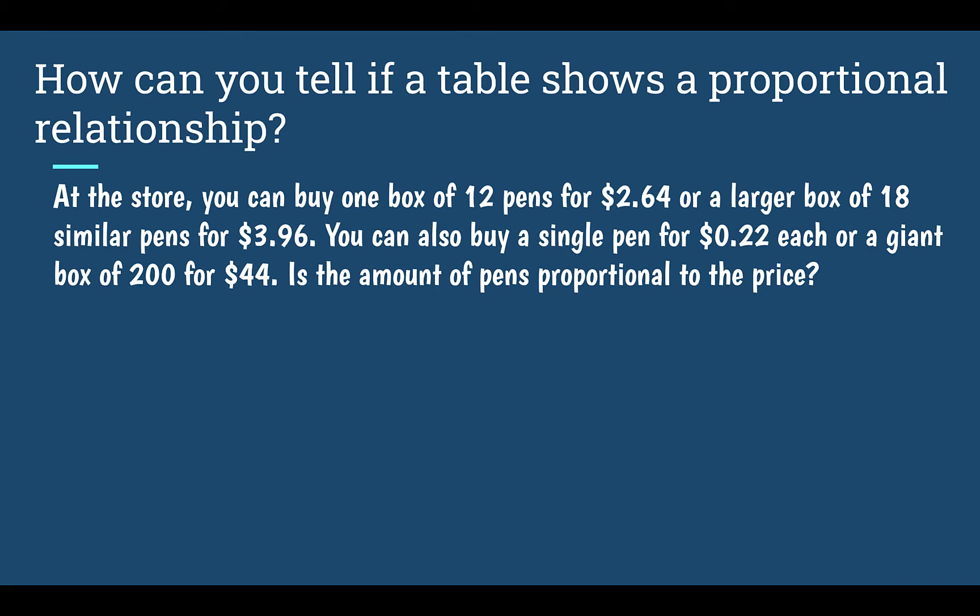So how can you tell if a table shows a proportional relationship? If you remember back a few lessons, part of our definition of a proportional relationship was that it had an equivalent ratio every single time. For example, one box of granola bars had six granola bars, two boxes had 12, three boxes had 18, four boxes would have 24 — every single time the same ratio. If it has the same ratio every time, it's proportional; if it doesn't, it's not proportional. And we learned that ratio was called the constant of proportionality.